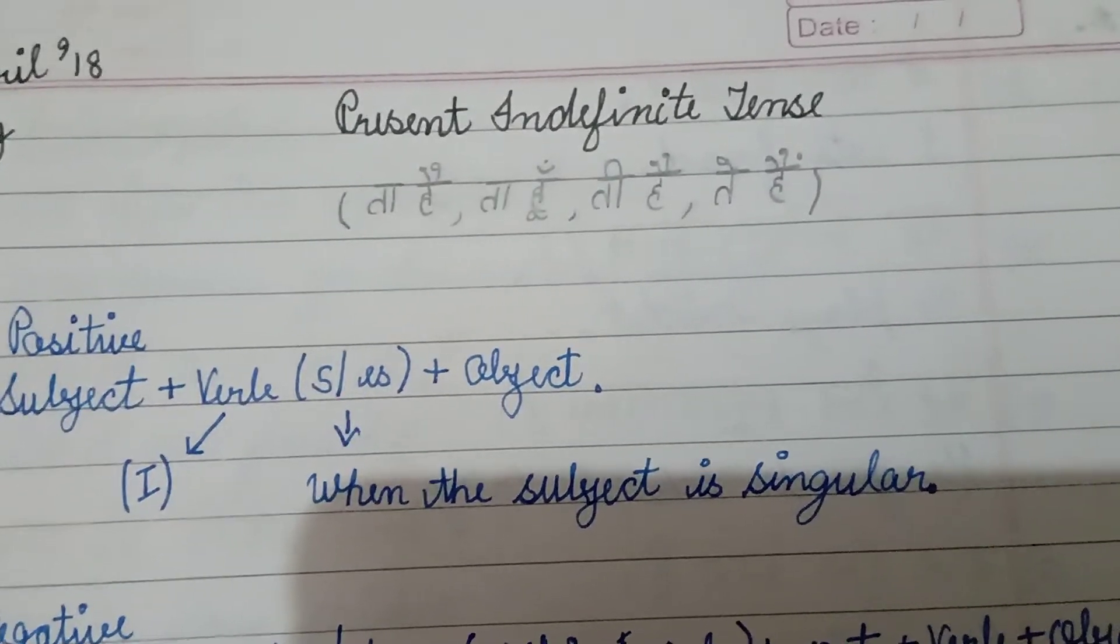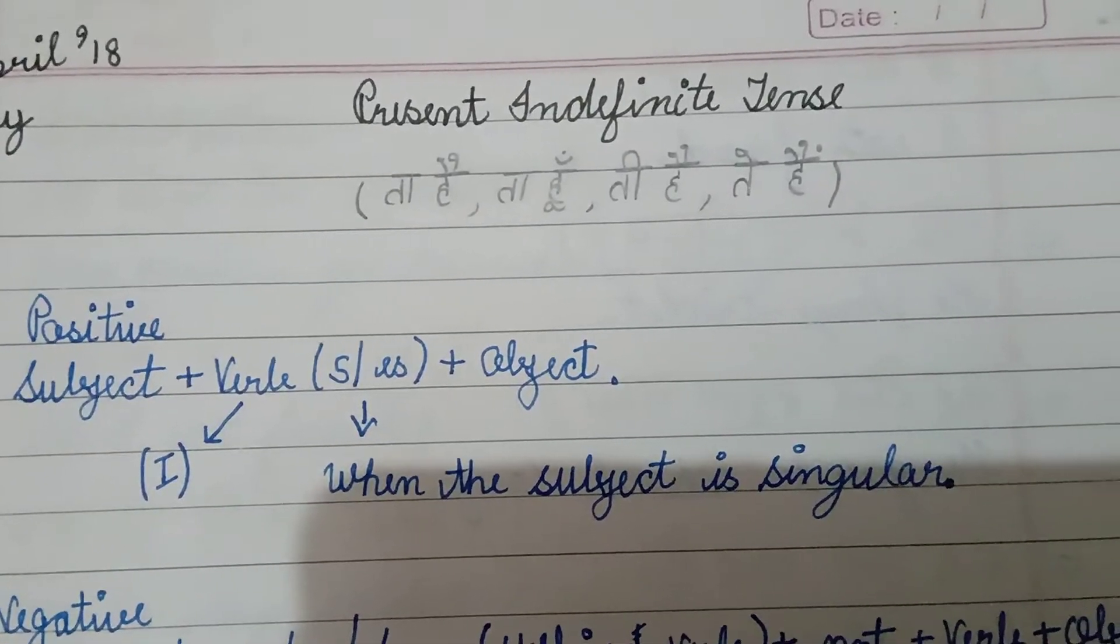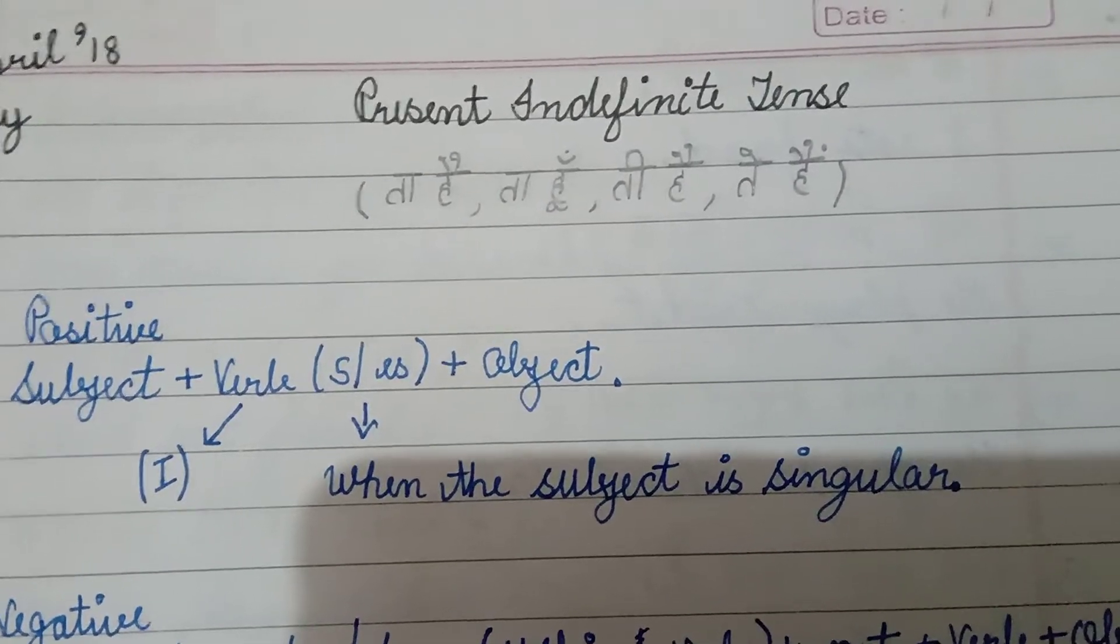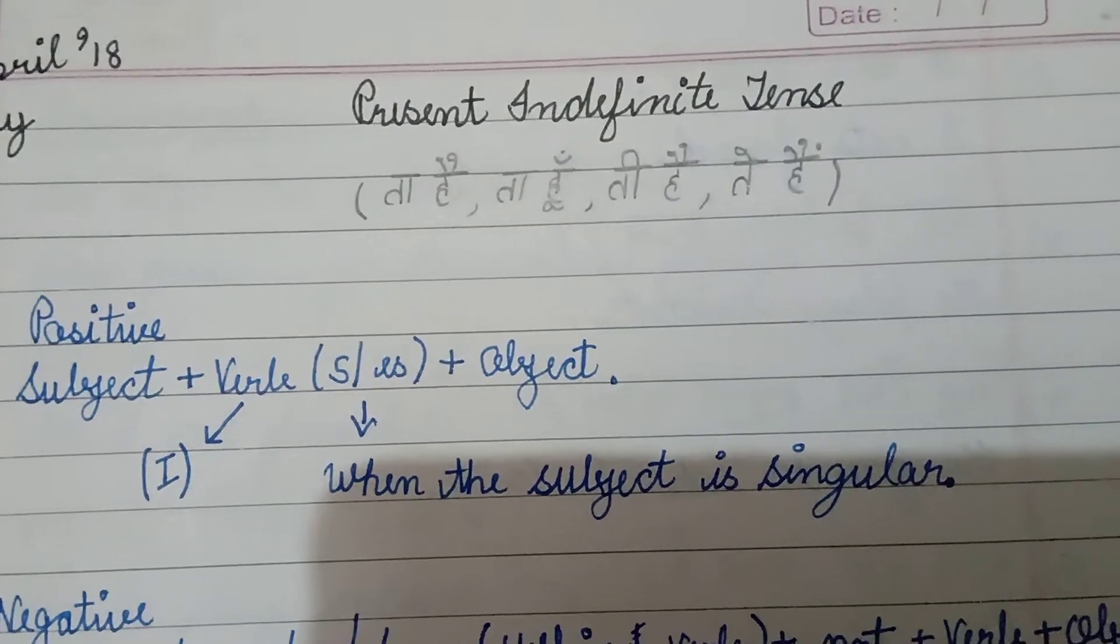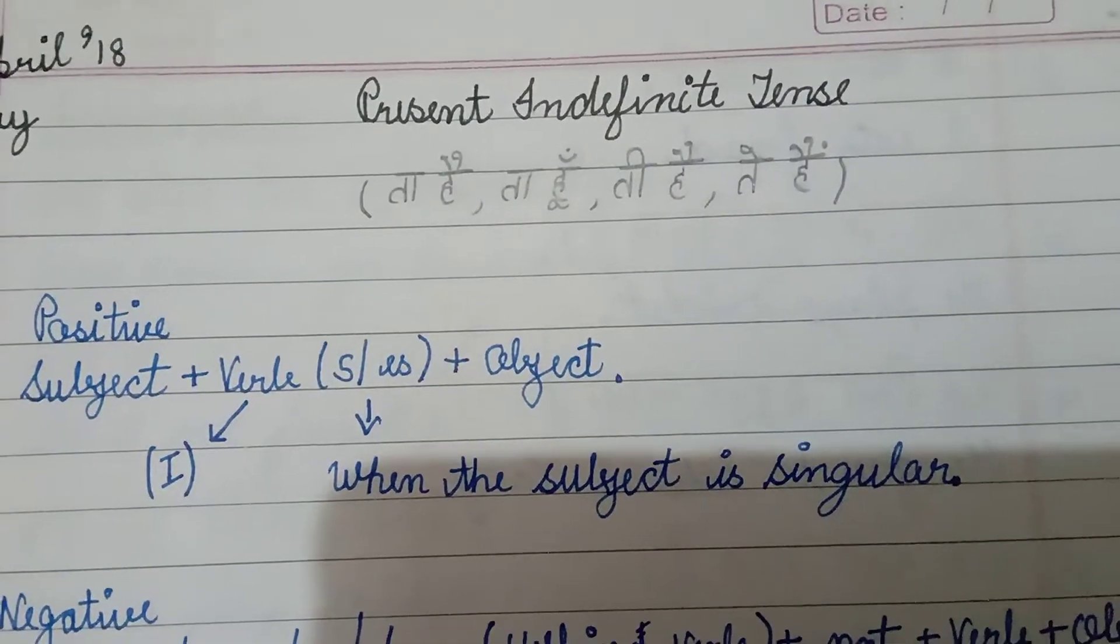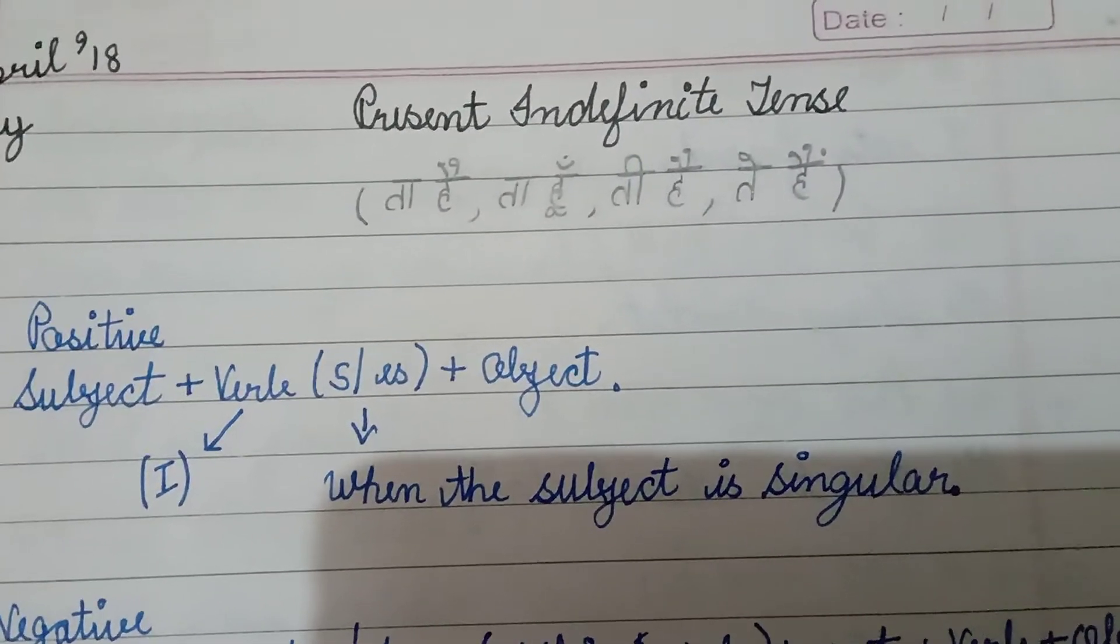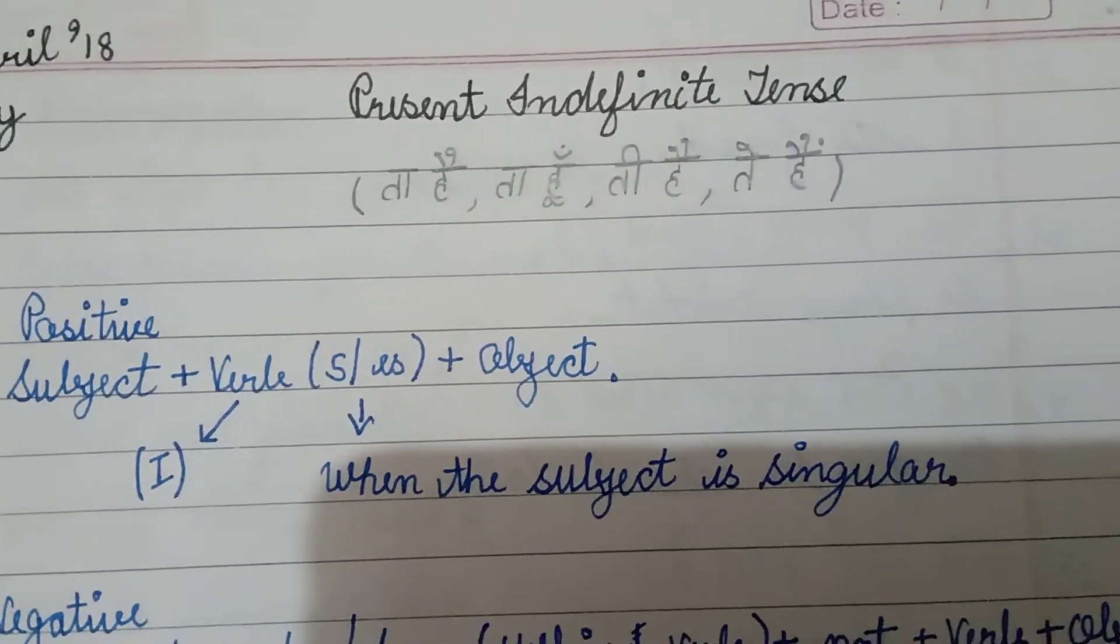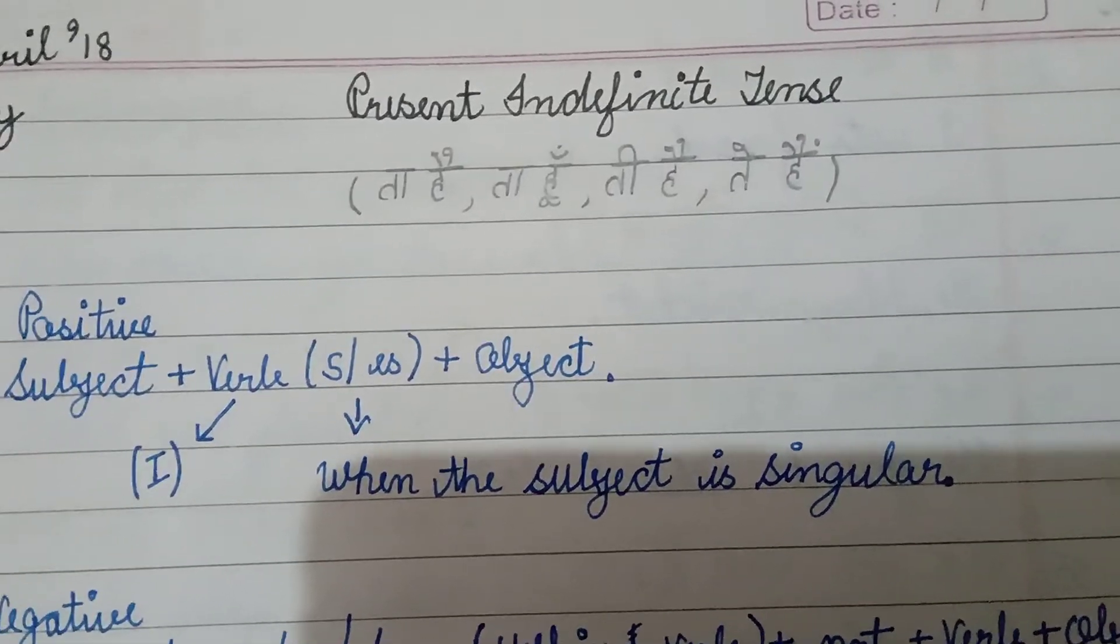An example can be Rohan, we will take him as a subject. Rohan, play, which is the first form of verb. And we will add S because Rohan is singular. Rohan plays football every day. So, that football is the object. Our sentence of present indefinite tense completed. Rohan plays football every day.